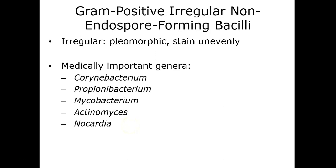The third and final category is the non-endospore-forming irregular microorganisms — called irregular because they are pleomorphic, able to vary their shapes. Five major genera: Corynebacterium; Propionibacterium acnes, a normal flora of the sebaceous glands of the skin; Mycobacterium, including M. tuberculosis, M. leprae, M. marinum, and M. avium; and then Actinomyces and Nocardia.